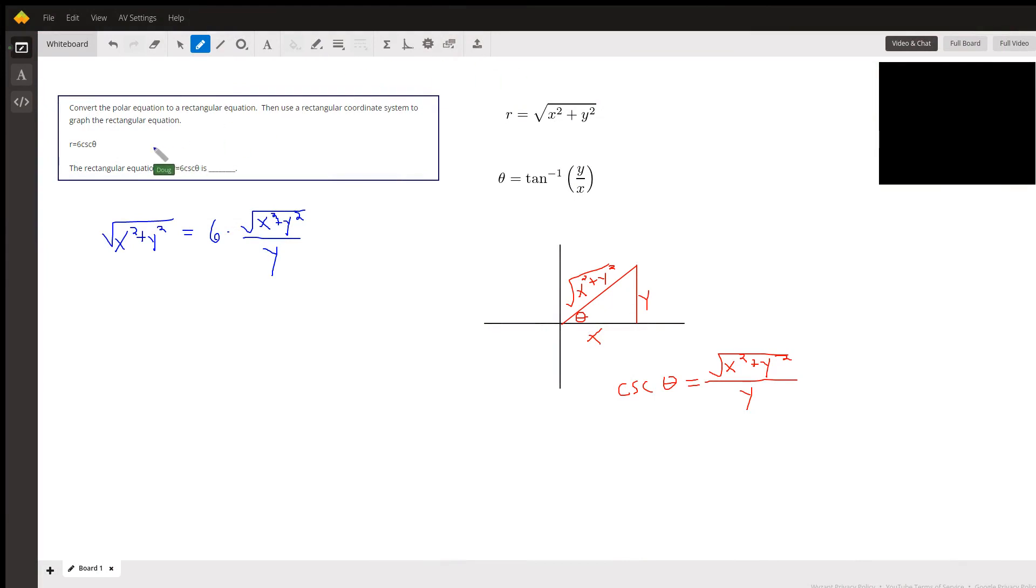Okay, you're asked to convert r equals 6 cosecant of beta into a rectangular equation. You have to use these two pieces of information: r's rectangular coordinates is the square root of x squared plus y squared - that's actually this hypotenuse right here - and theta equals the angle that has a tangent of y over x.